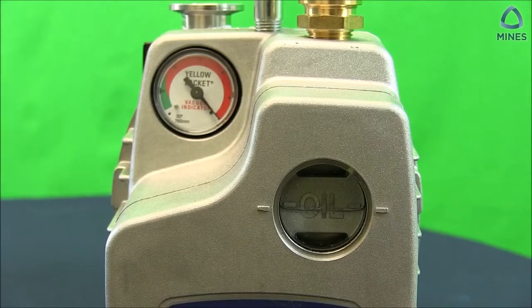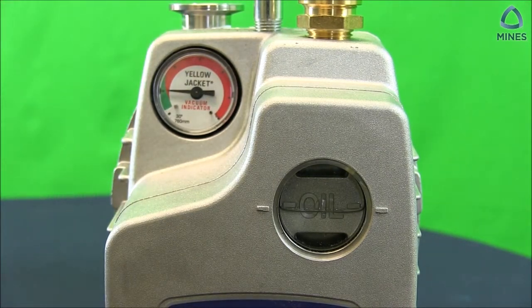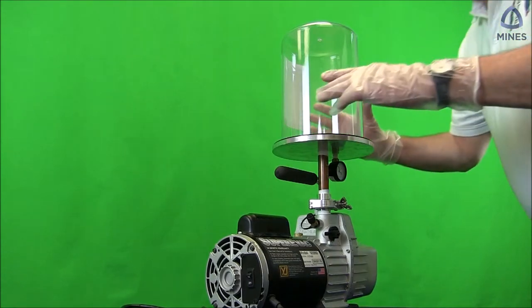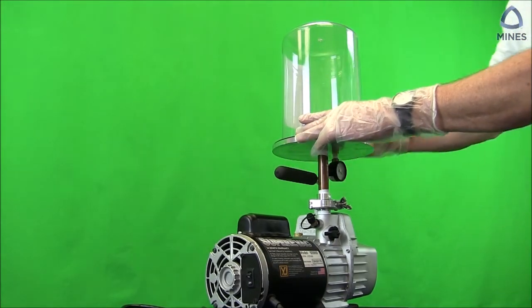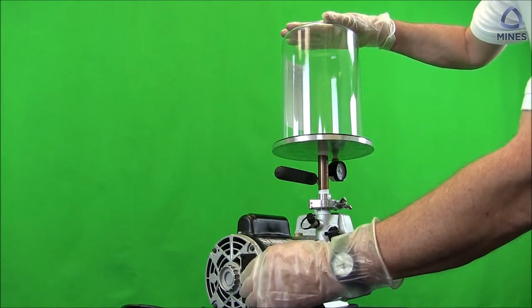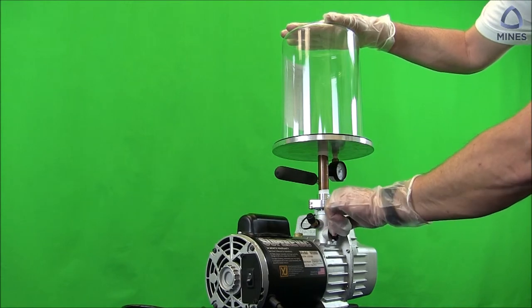Next, turn on the pump. If the blank off valve is closed, the gauge on the body of the pump should quickly indicate a pressure near the green region of the gauge. Next, assure that the bell jar is still centered on the rubber gasket of the base plate, and place your hand gently on top of the bell jar to keep the bell jar from shaking off the rubber gasket. Finally, open the blank off valve.